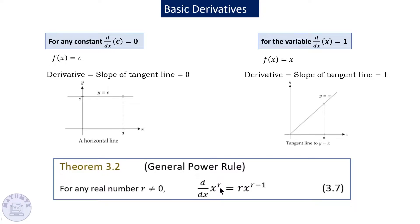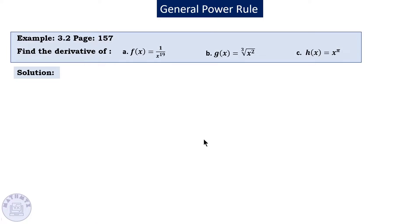In general, if you want to find the derivative of x to the power r, you take the power down, multiply by x to the power r minus 1 — so you subtract 1 from the power. Let's practice on the general power rule with a couple of examples.